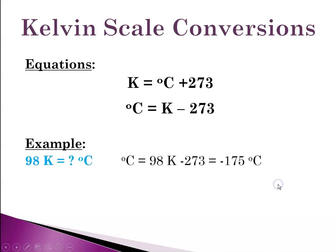So here comes an example. 98 Kelvin is equal to what in degrees C? So degrees C here would be equal to 98 Kelvin minus 273. So C, K minus 273, K minus 273. And that would give us negative 175 degrees C.